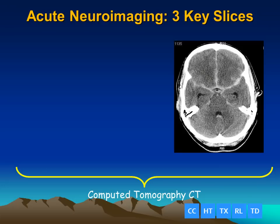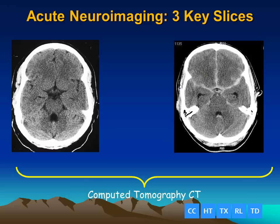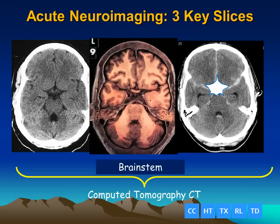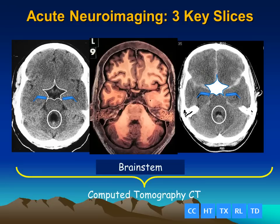Let's take a look at a case. Here is a patient that presented with the worst headache of their life. This is at the level of the suprasellar cistern and the brainstem. Comparison to the normal scan easily demonstrates that we have abnormal hyperattenuation from blood in the suprasellar cistern. This is the patient who has had a subarachnoid hemorrhage. We can also see a little bit of blood inside of the fourth ventricle.